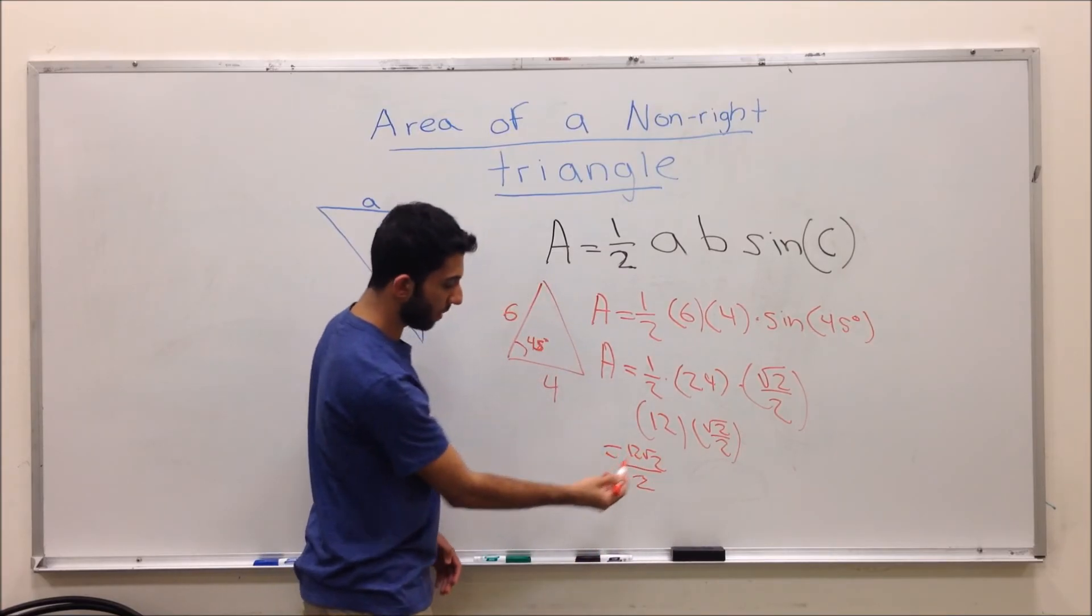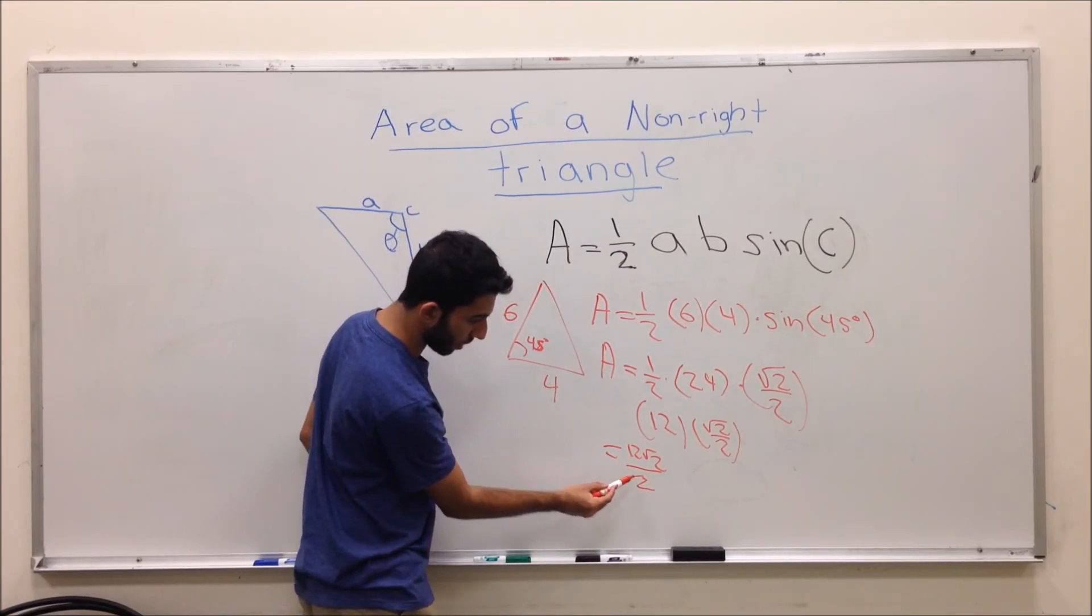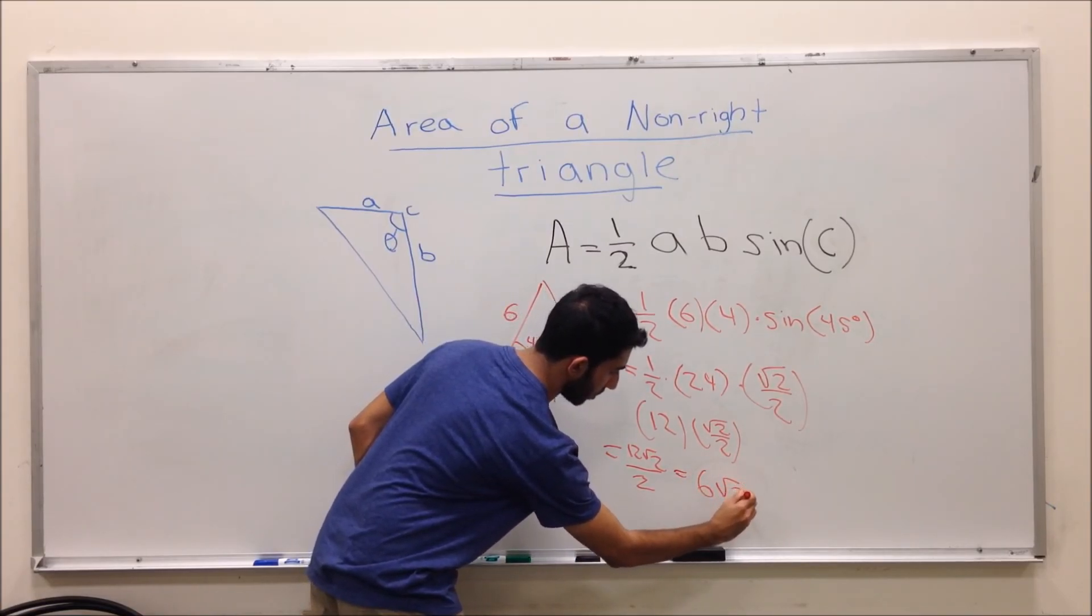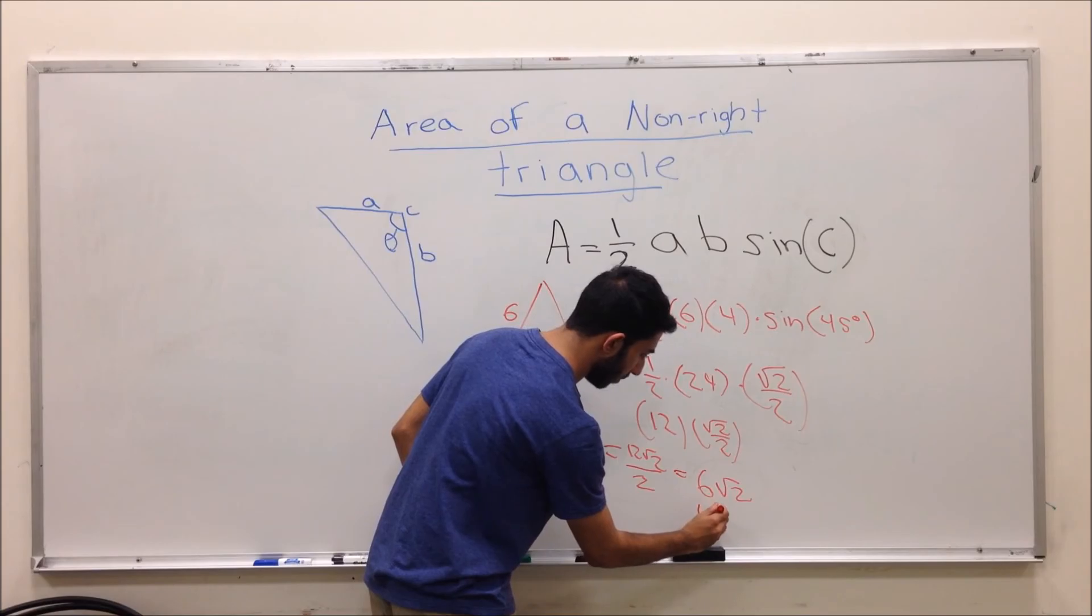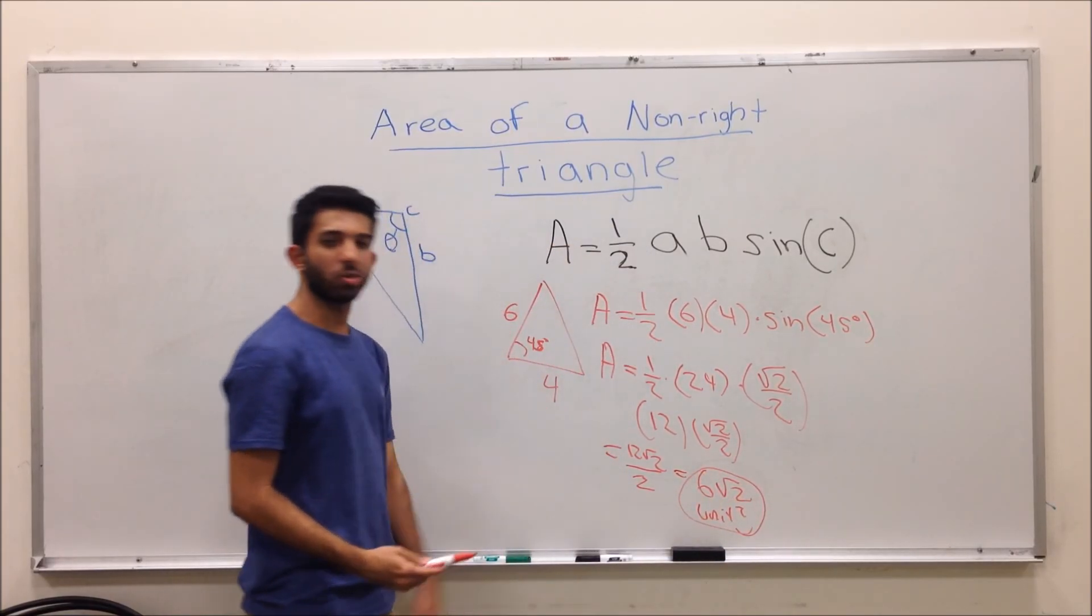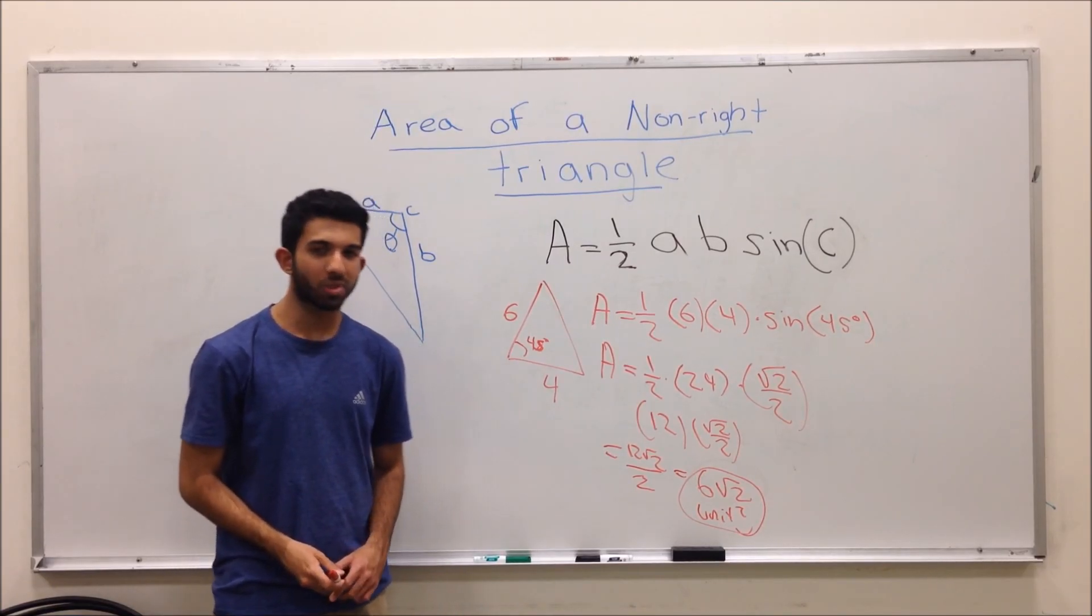And when you simplify this, you can divide the 12 by 2 and you get 6 radical 2 units squared, which will be your area for your non-right triangle. Thank you and I hope this trick helps.